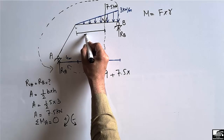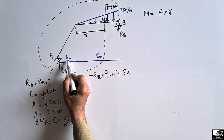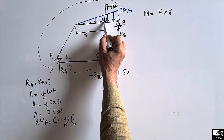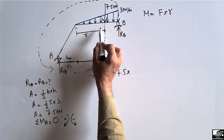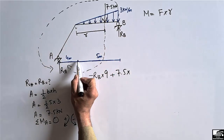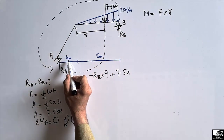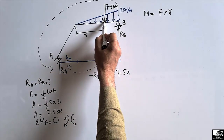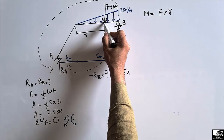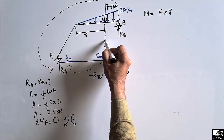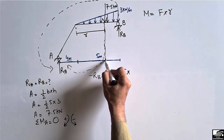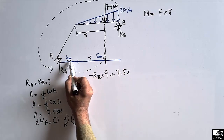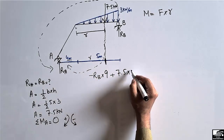Let us call the centroidal distance from the left end of the beam as R. The moment arm for the concentrated load about point A is R plus 4 meters, because the inclined member contributes 4 meters horizontally. So the load at the centroid of the triangle is at a distance of R + 4 from point A.